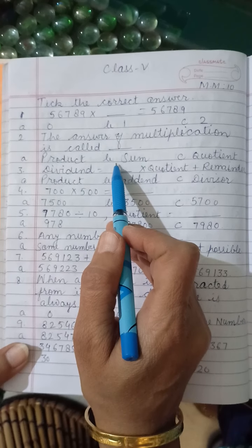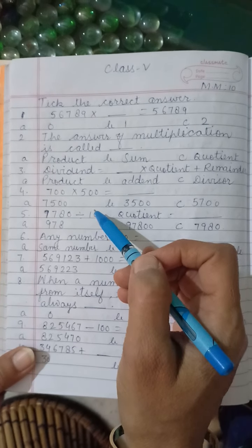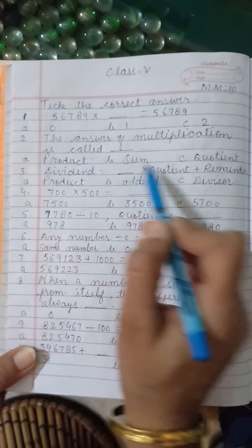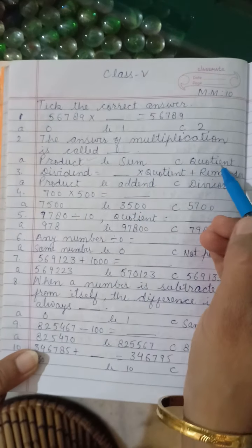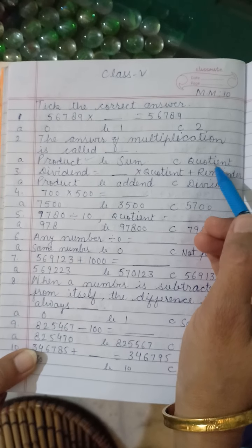When we multiply the numbers, then we got one answer. That answer is called the product. Sum is the answer of addition. And quotient is the answer of division.